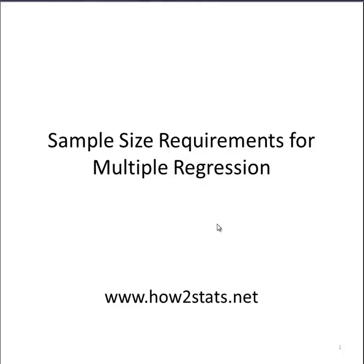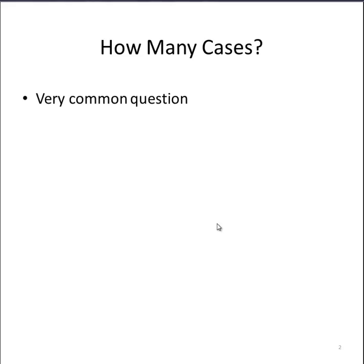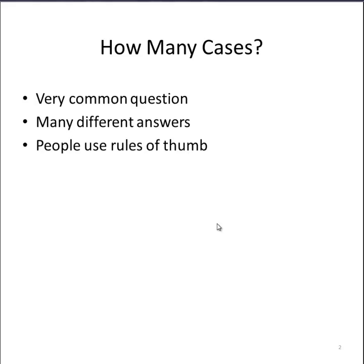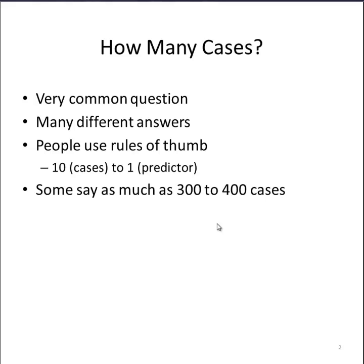This question is about how many cases you need, and as I mentioned, it's very common. There are many different answers to this question, and most people use a rule of thumb. If you read about it, you'll find a lot of rules of thumb. Perhaps the most common rule of thumb is 10 cases for each predictor. So that would mean if you had three independent variables in your multiple regression analysis, you would need 30 cases. That's a very commonly used rule of thumb. Is it accurate? We shall find out.